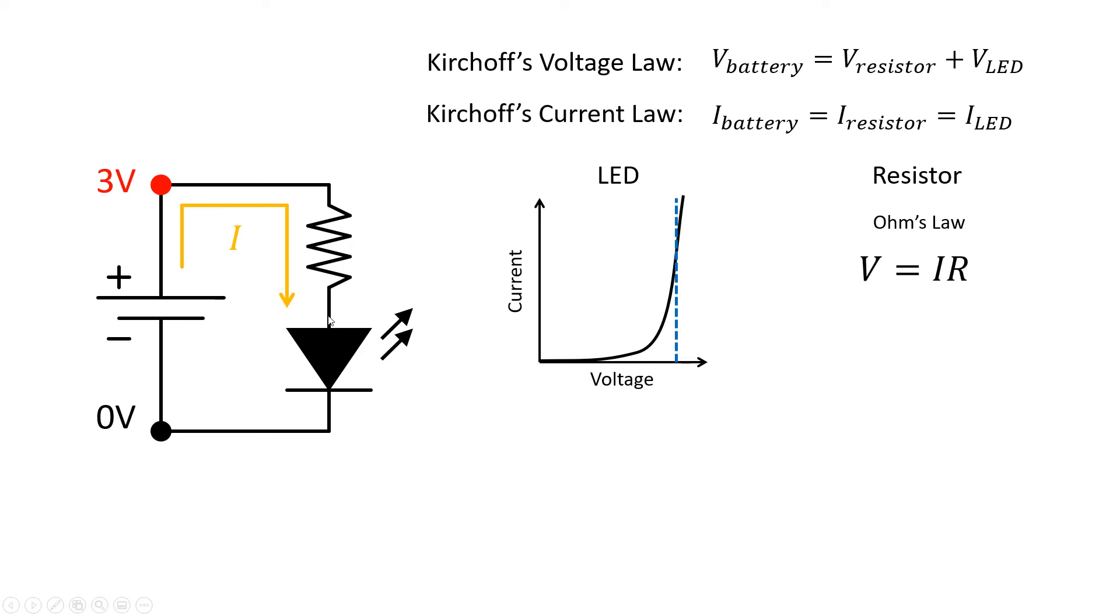We know that the forward voltage drop across the LED is about two volts, which is going to give us two volts there. Again, it's important to remember that these voltages are relative to ground, so I get this number from zero plus two. Now that we have all this information, we can calculate the voltage drop across the resistor, again remembering that voltage is a difference between two points. So the voltage across the resistor is not three volts, it's one volt, because I have three volts on this end of the resistor and two volts on this end of the resistor. So the voltage drop across the resistor is three volts minus two volts, or one volt.